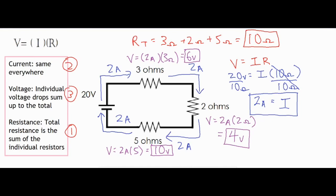And the final thing that I want to do just to double check my work is I want to add up all my individual voltage drops to see if it equals my total. So I have 6 volts plus 4 volts, which is 10 volts, and then plus this final 10 volts is 20 volts. So it does match up to this 20 volts over here.